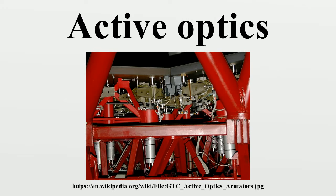These thin mirrors are too thin to maintain themselves rigidly in the correct shape, so an array of actuators is attached to the rear side of the mirror. The actuators apply variable forces to the mirror body to keep the reflecting surface in the correct shape over repositioning. The telescope may also be segmented into multiple smaller mirrors, which reduce the sagging due to weight that occurs for large, monolithic mirrors.